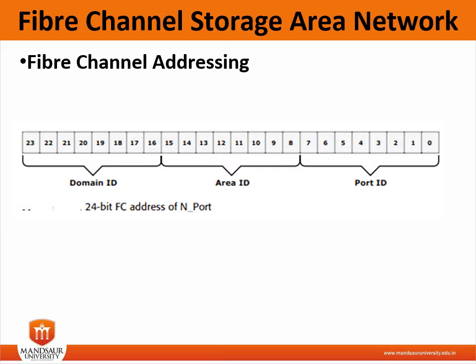This is the 24-bit FCID address of an N-port. The first field of the FCID address contains the Domain ID of the switch. The Domain ID is a unique number assigned to each switch in the fabric. This is an 8-bit field and there are only 239 available addresses for the Domain ID.